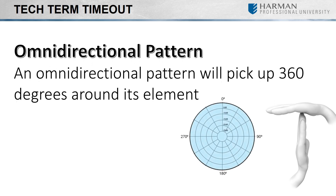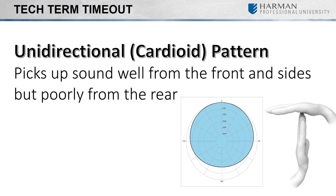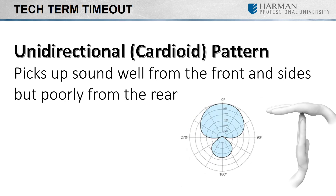Omnidirectional polar patterns allow a microphone to pick up sound from all directions. The term unidirectional is a broad term encapsulating a few different polar patterns. Unidirectional microphones pick up sound from a single point of entry, but that single point can vary from very wide to extremely narrow. Within this family of pickup patterns, there exists the following: cardioid, subcardioid, supercardioid, and hypercardioid.